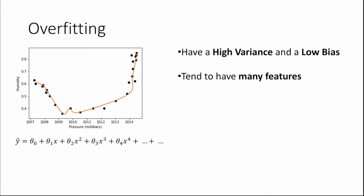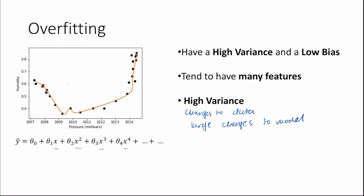In this case we have x, x squared, x cubed, x to the 4, and many more features. A high variance means that changes to our data make significant or large changes to our model's predicted values. For example, if we were to add new data points like here and here and maybe remove a few, what would happen to our model?